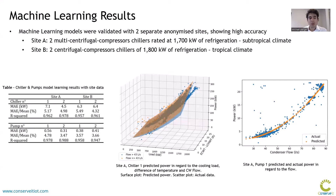Machine learning results for those equipment models were validated with two separate anonymized sites, showing high accuracy as seen in the table on the bottom left, with R-squared values of 0.95 or above showing a good fit between the models and the data. This can also be seen in the graphs of the chiller model showing the trend of chiller power usage as a function of the input variables, and similarly with the pump model showing for a specific pump the predicted and actual power with regard to flow.